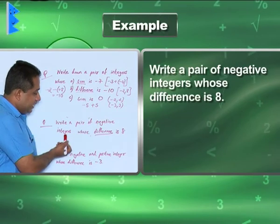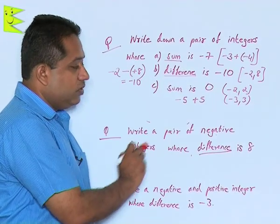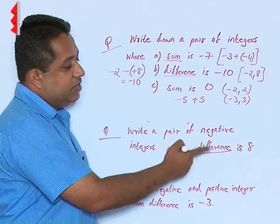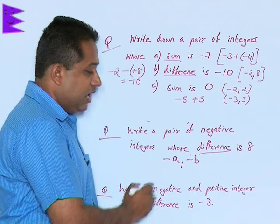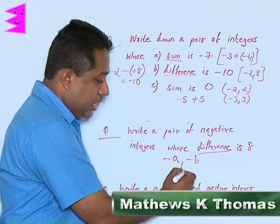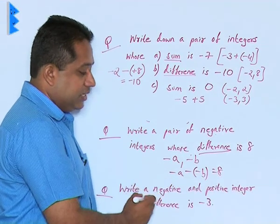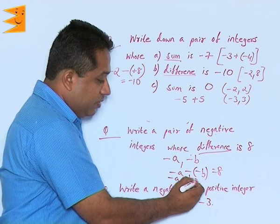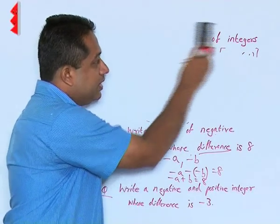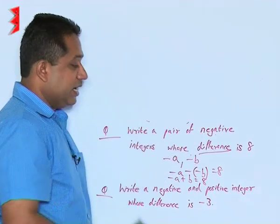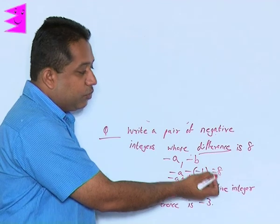Write a pair of negative integers whose difference is 8. That means we have to find two negative integers — both are negative — and the difference is 8. We should have two numbers, minus a and minus b, and when we subtract: minus a minus of minus b, the result should be 8. This simplifies to minus a plus b equals 8. Both numbers must be negative integers, and when we subtract them they should give us positive 8.